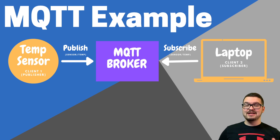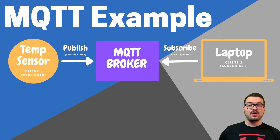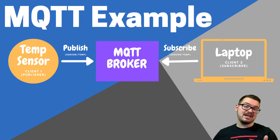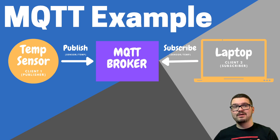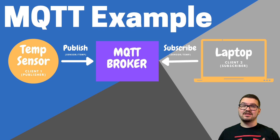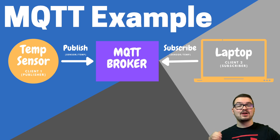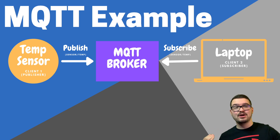Now that we know a little bit about each of the concepts, let's look at the example again. We have client one — the Arduino with a temperature sensor — and from the example we can see it's a publisher, publishing a message with the topic sensor/temp. In this example, the temperature sensor is simply reporting its current temperature, and client one is passing that message with the topic sensor/temp to the broker.